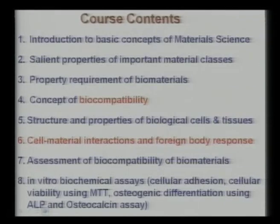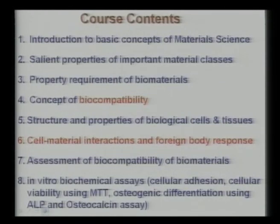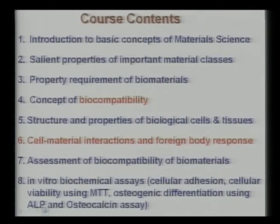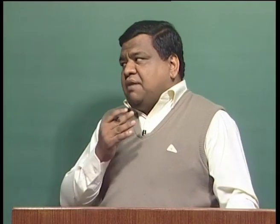Third is the property requirement of biomaterials. Fourth is the concept of biocompatibility — this is the core idea and core property requirement for developing biomaterials, so an in-depth understanding of what is meant by biocompatibility needs to be developed. Since biomaterials sit at the interface of biology and material science, sufficient background in biological cells and tissues is also needed, particularly the structure of biological cells.